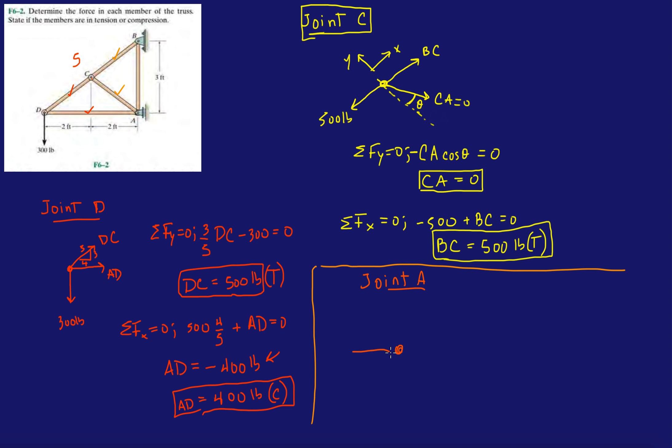So, 400 pounds in compression. Because that's what we obtained in the first joint. Technically, I have CA, like if we had done a naive computation. But we know CA is zero, so I'm not going to include it.